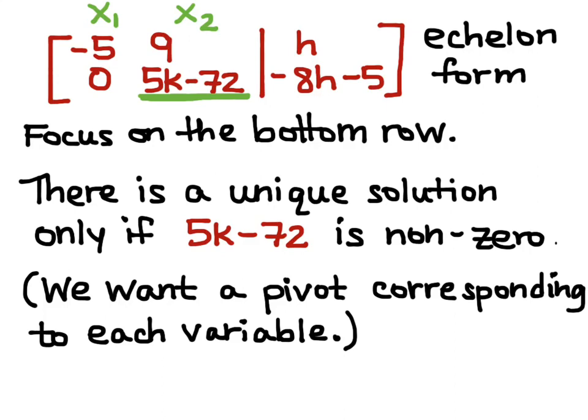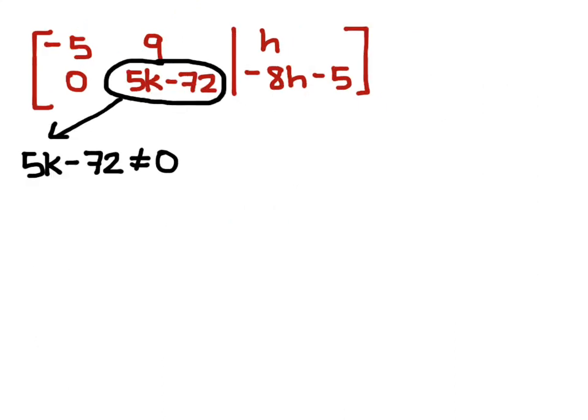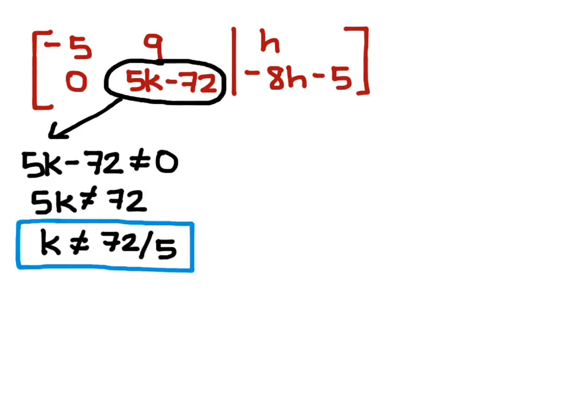Okay, so now on a new screen, I'm going to let that 5k minus 72 be not equal to 0, and I solve this equation for k. So, I get 5k is not equal to 72, so k is not equal to 72 over 5.